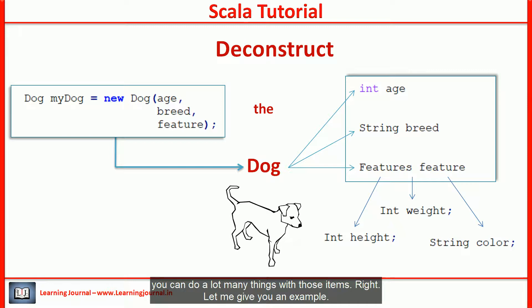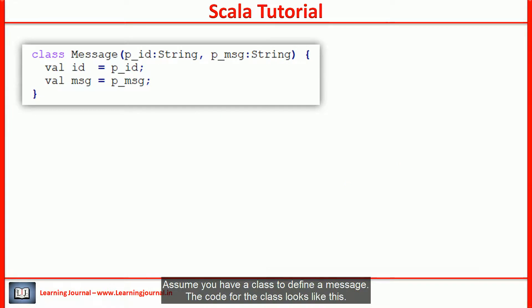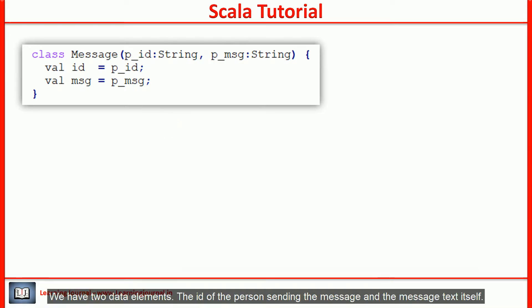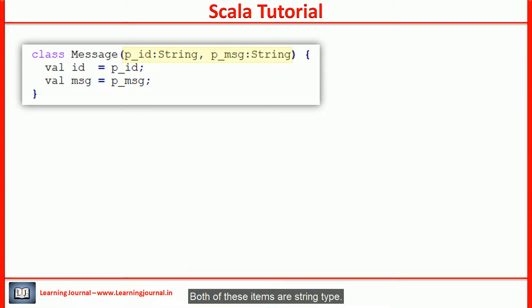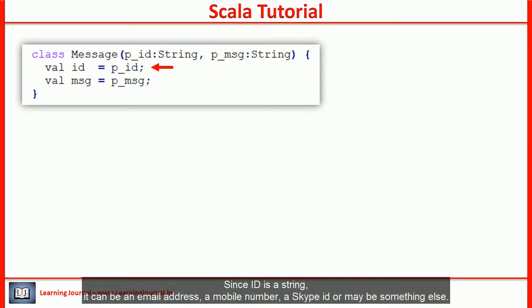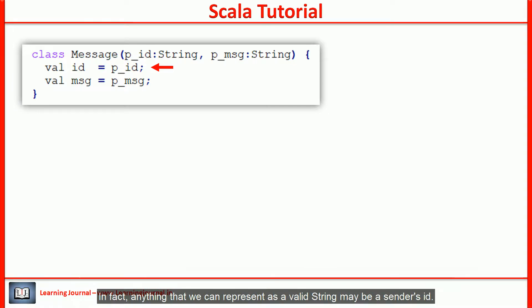Assume you have a class to define a message. We have two data elements: the ID of a person sending the message and the message text itself — both string type. Since ID is a string, it can be an email address, a mobile number, a Skype ID, or maybe something else. Anything that we can represent as a valid string may be a sender's ID.